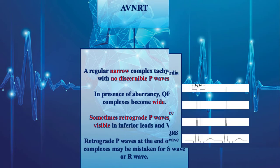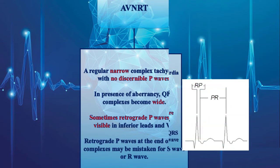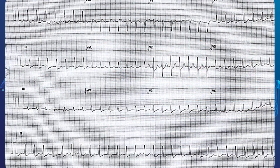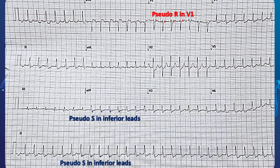In general, the RP interval, measured from the peak of the R-wave to the beginning of the P-wave, less than 70 milliseconds is highly in favor of AVNRT, although a longer RP interval does not exclude AVNRT. This electrocardiogram illustrates typical AVNRT: regular narrow complex tachycardia with pseudo-R-wave in V1, pseudo-S-wave in inferior leads, and an RP interval less than 40 milliseconds — these findings favor AVNRT.